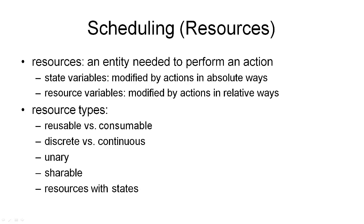Scheduling deals with the problem of assigning resources to actions. This assumes that we've already decided which actions we want to execute — so it assumes that the planning process, as we've described it so far, has been done. The first question I need to answer is: what is a resource? We can informally describe a resource as an entity needed to perform an action. One way to integrate this into our planning formalism would be to extend the operator definitions by adding more parameters that describe the resources needed to execute instances of that operator.